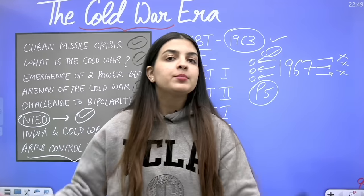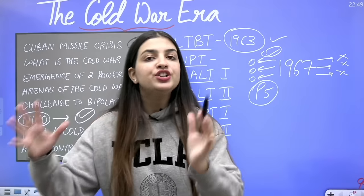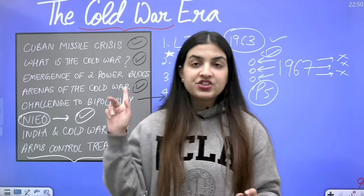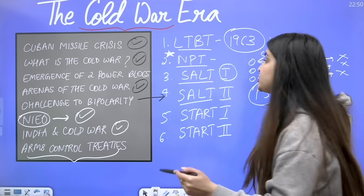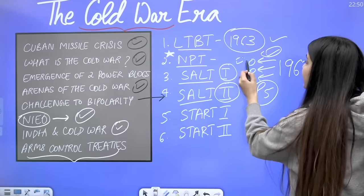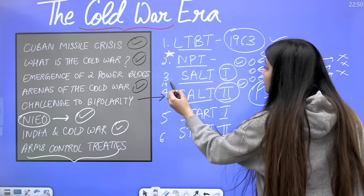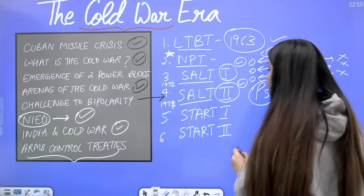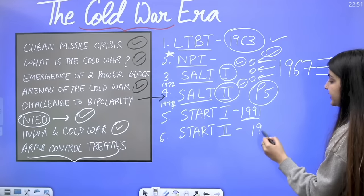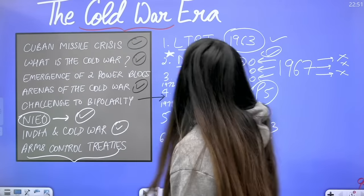Next came SALT 1 and SALT 2 — the Strategic Arms Limitation Treaties. SALT 1, signed in 1972, limited the Anti-Ballistic Missile System. SALT 2, signed in 1979, officially achieved the limitation of strategic offensive arms — which SALT 1 had only discussed. Then START 1 occurred before the disintegration of USSR in 1991, and START 2 was signed in 1993 with Russia. Both START treaties involved further limitations on strategic offensive arms.